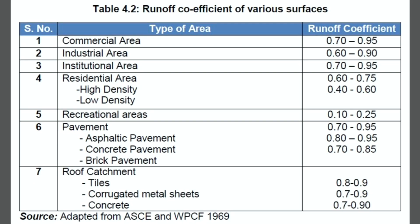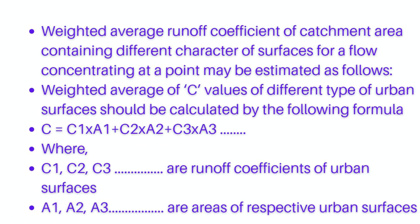The runoff coefficient varies by type of area. For commercial areas it is 0.70 to 0.95, and for industrial areas it is 0.60 to 0.90. Different coefficients are given for different area types. The weighted average runoff coefficient for catchment areas containing different surface types should be calculated as: C = (C1·A1 + C2·A2 + C3·A3 + ...) / (A1 + A2 + A3 + ...).